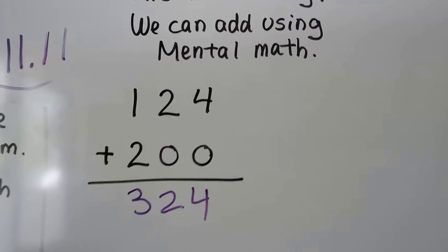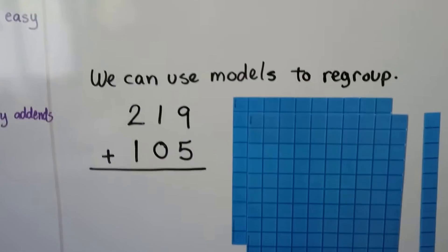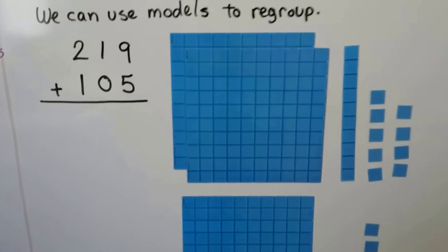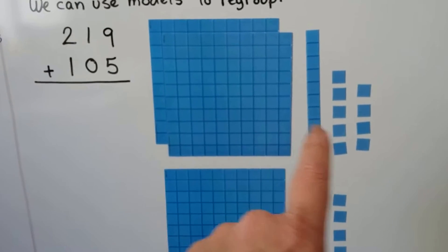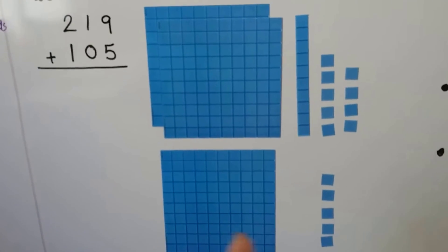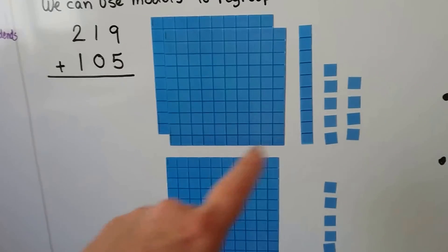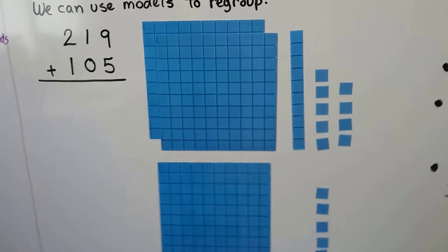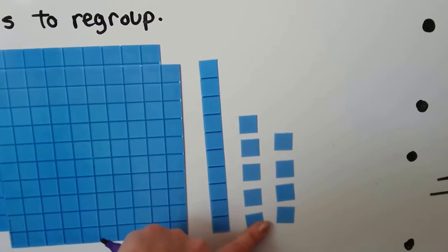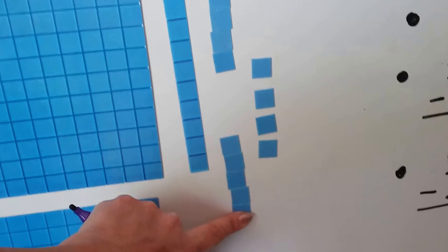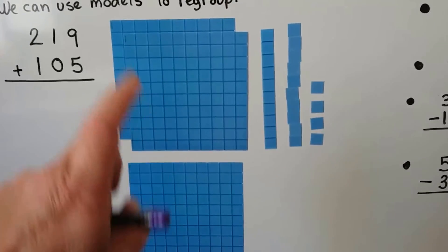We can use models to help us regroup. If we have to add 219 and 105, we have 200, 110, and nine ones, plus 105. We can regroup these - we can put the ones together to make a 10. We have five here, and we can scoot these five up underneath to make a long of 10.